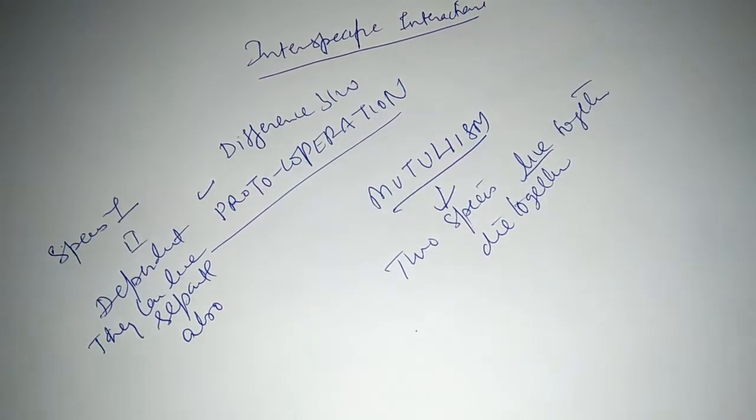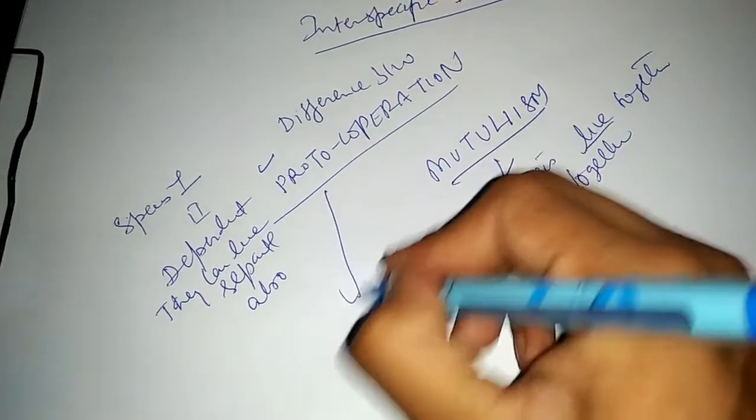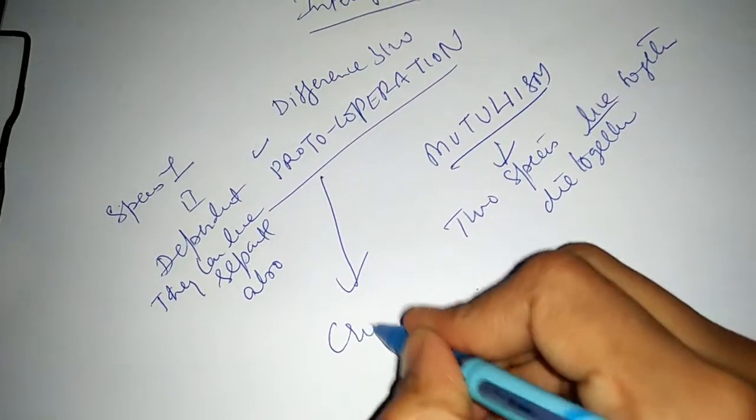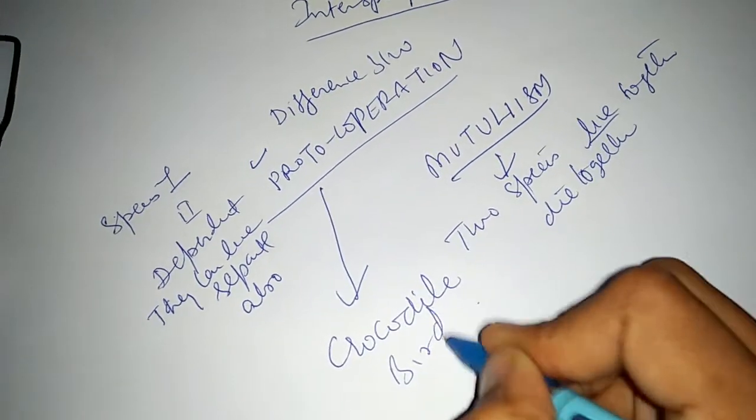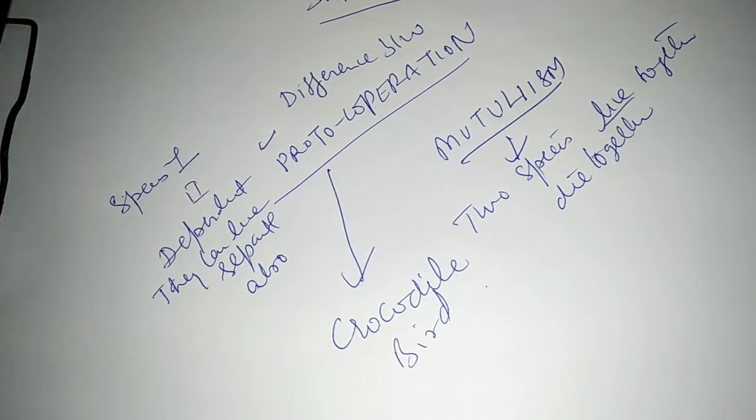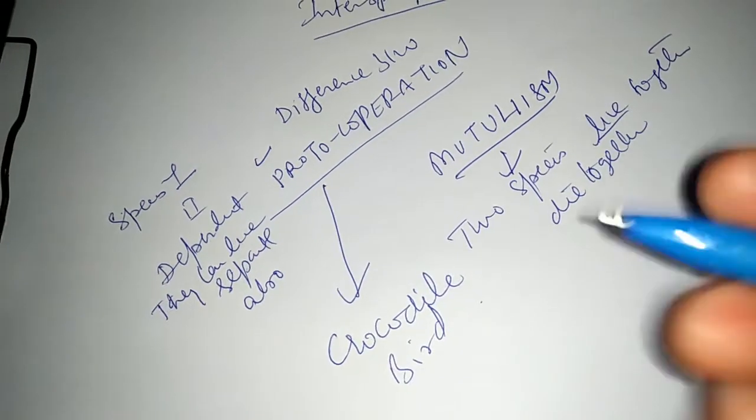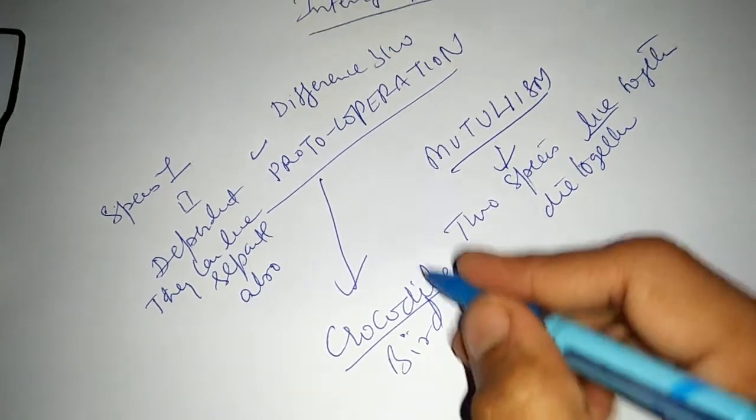I hope it is clear to you. Let's study this concept with examples. For proto-cooperation, you can give the example of crocodile and bird. The bird is taking the extra food, the meat particles from the teeth of the crocodile, so it is an advantage to both, but the bird and crocodile can also live separately.